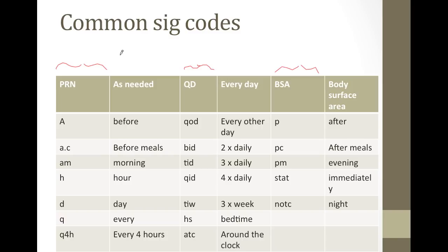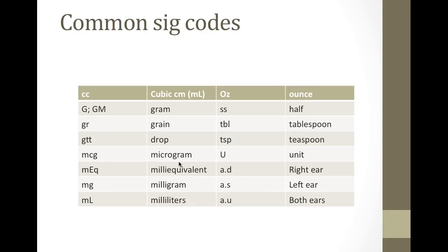Whenever you see PRN, that stands for as needed. If it's ever written as A, that stands for before. AC is before meals, and so on. This is going to be the frequency of the medication. These are going to be the units of the medication: G is grams, GR is grain, GTT is drops, and so on and so forth. There are many more SIG codes to know, but these are the most common ones.